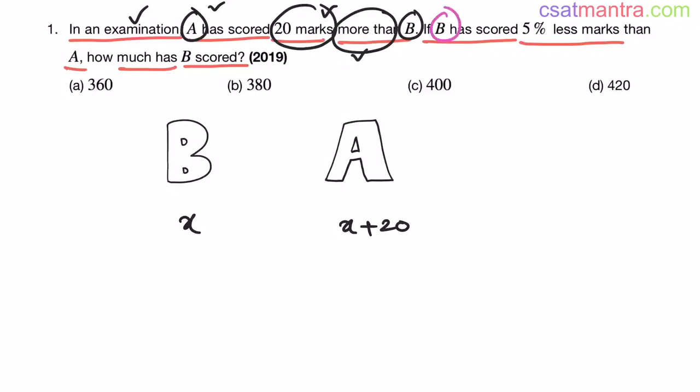Now, if B has scored 5% less marks than A. We don't know the percentage of marks scored by B, but it is 5% less than marks scored by A. I am taking A's marks as 100% because we are comparing B's marks with A. A is the standard. So, taking A's marks as 100%.